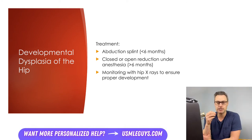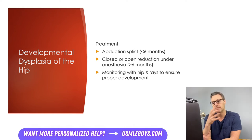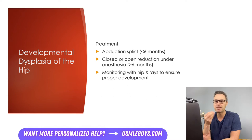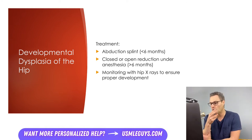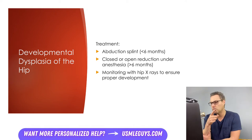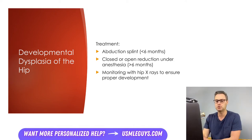An abduction splint is used for patients under six months of age and is associated with excellent outcomes — the vast majority of patients would obtain and maintain hip reduction with this early intervention. If not identified until after six months of age, either closed or open reduction under anesthesia would be needed. In either case, follow-up radiographs are obtained to ensure proper development of the hip joint.